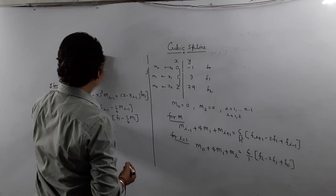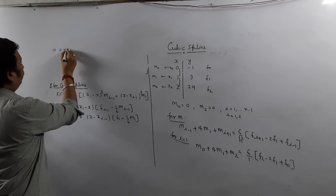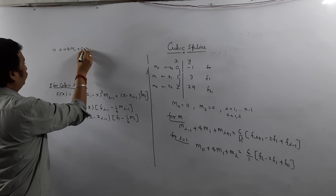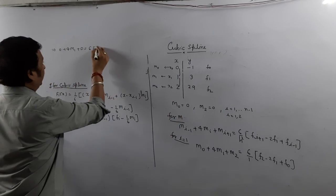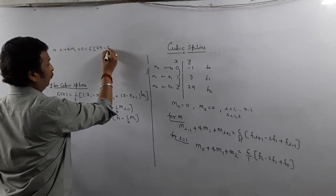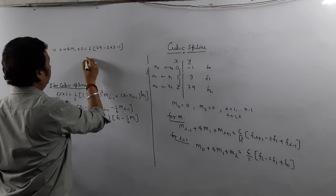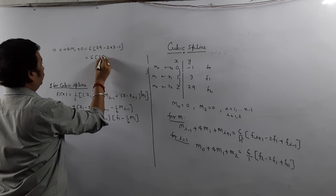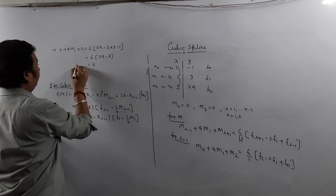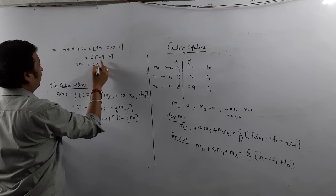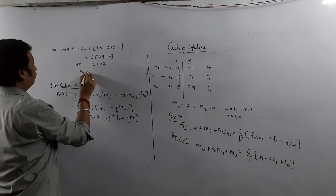Since M0 = 0 and M2 = 0, the equation becomes 4M1 = 6(29 − 2×3 + (−1)) = 6(29 − 7) = 6 × 22 = 132. So 4M1 = 132 − wait, simplifying: 29 − 7 = 22, giving 4M1 = 6 × 22 = 132, therefore M1 = 33. Now we have M0 = 0, M1 = 33, M2 = 0.